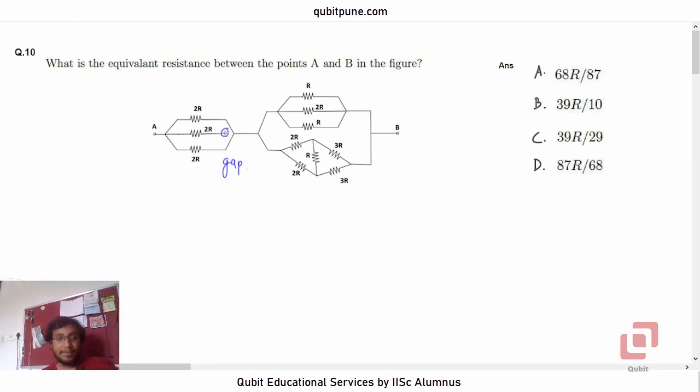First of all, let us find out the equivalent resistance between points A and C. Let's call it RAC. Now 2R and 2R, they are in parallel, so we need to take the sum of the reciprocals. So 1 upon 2R plus 1 upon 2R, that will be 2 upon 2R or 1 upon R, and we need to take the reciprocal of this. So RAC is R.